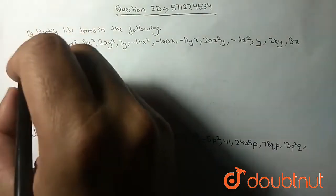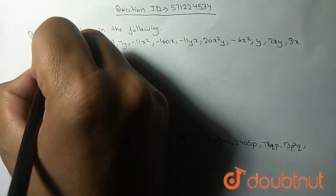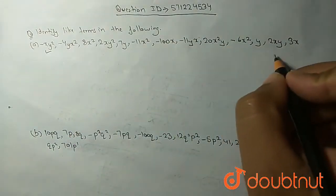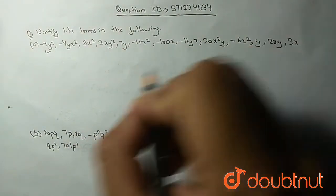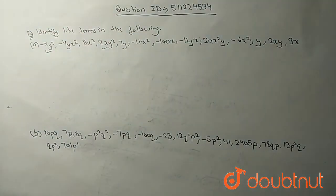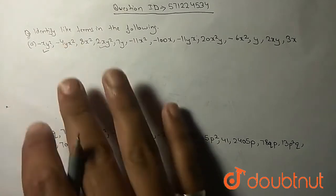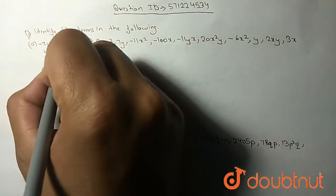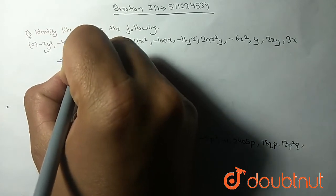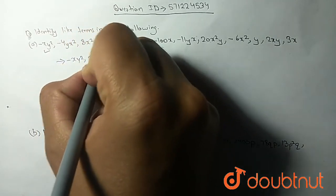In the first equation, the first is minus xy squared and another is 2xy squared. The first term you will get is minus xy squared and 2xy squared.